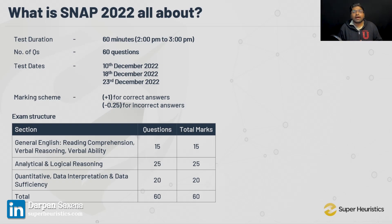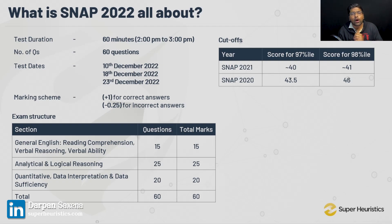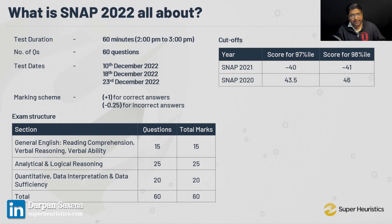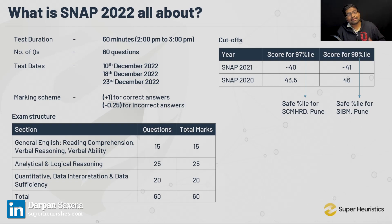Now, one very important thing — and this slide is very important for you. Let's look at the cutoff. What is the target? This one small table of cutoffs will reveal a lot of things to you. SNAP has been following the same pattern for the last two years, so only these two cutoffs will matter for you right now. The reason I've shared the 97 and 98 percentile cutoffs is that 97 percentile is a very safe percentile for SCMHRD Pune, whereas 98 percentile is very safe for SIBM Pune — the two best institutes you'll get through SNAP.